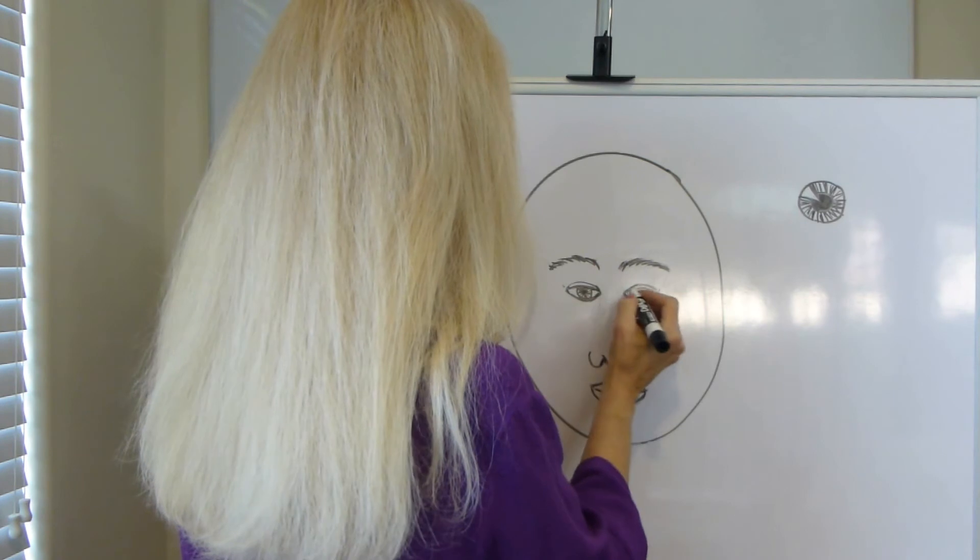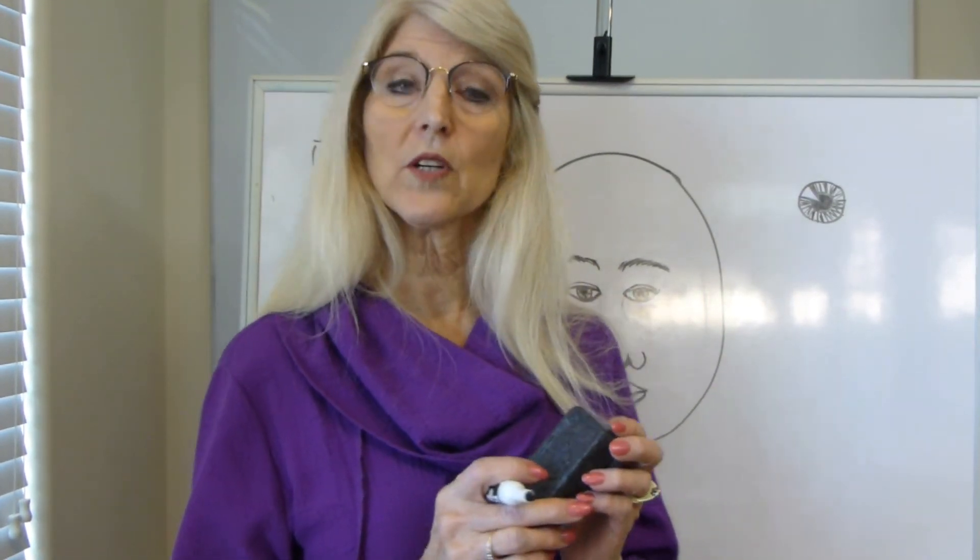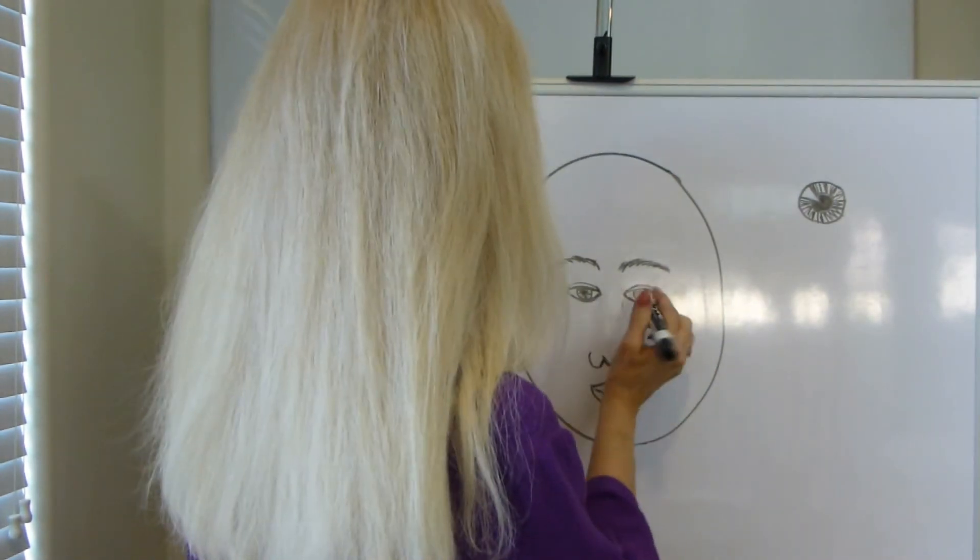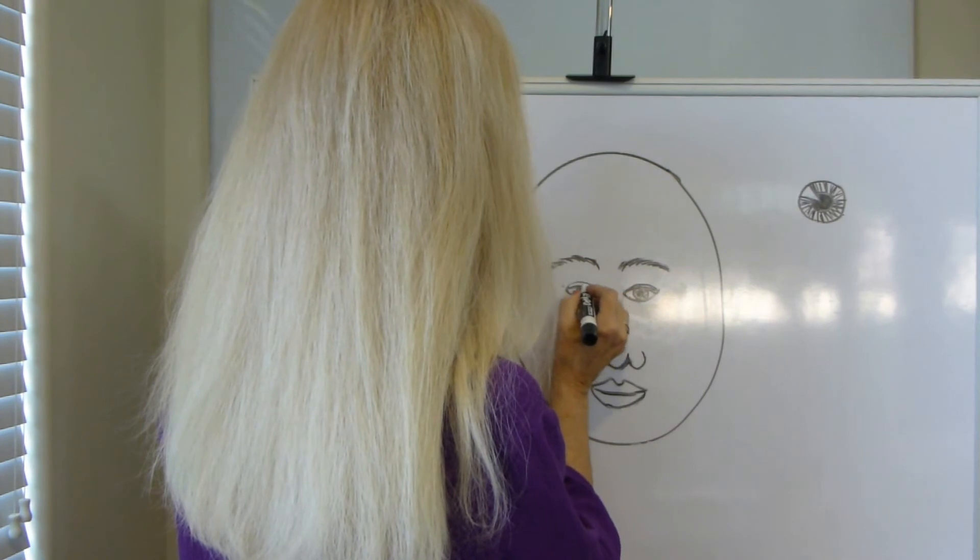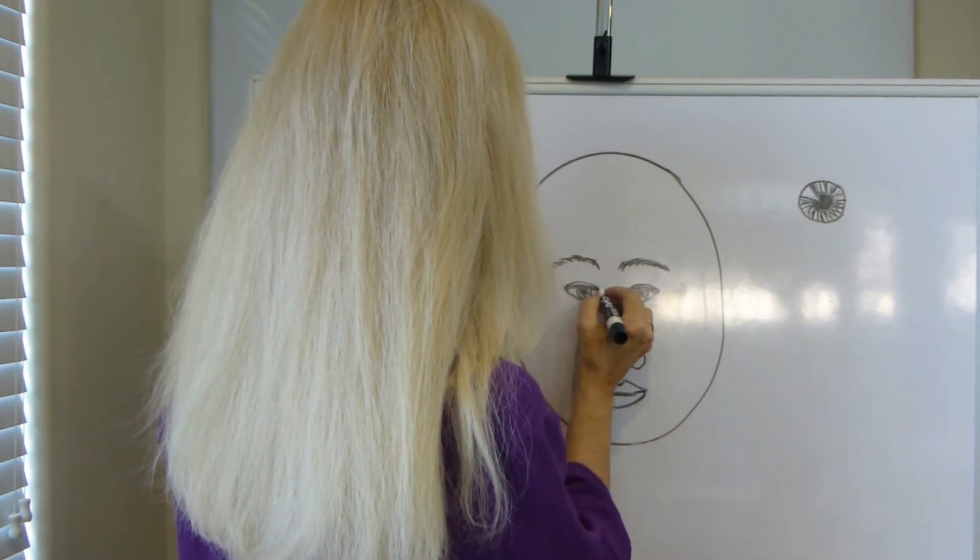Same with the eyes. If they're big, make them big. If they're a little bit smaller, make them smaller. If they have bigger eyelids at one side of the eye, then make it look like that too.